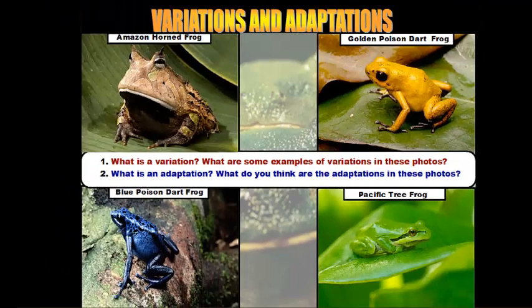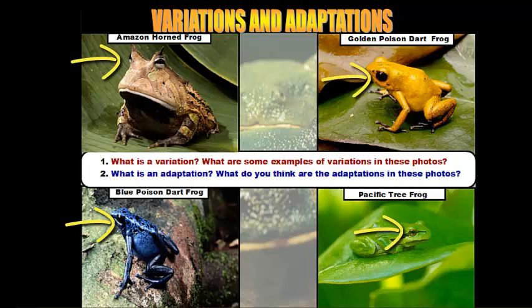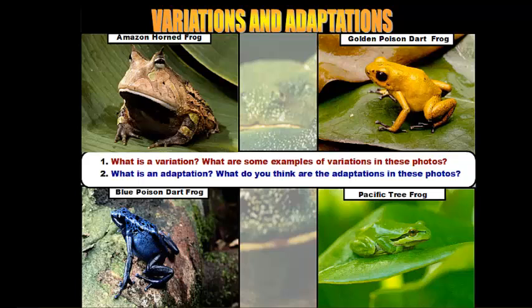You'll also notice variations or differences in the eye positioning of the frogs. The Amazon horned frog has its eyes set higher on the skull than the other three frogs. The other three frogs have them on the side, up a little bit, but not as high up as the Amazon horned frog. And these variations are there for a reason.